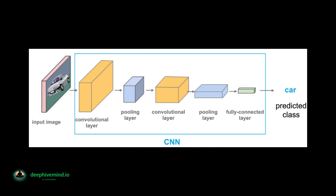After passing through multiple convolutional and pooling layers, the feature maps are then passed through fully connected layers, which analyze the high-level features of the data. The fully connected layers use the information from the previous layers to make predictions about the input data, such as classifying an image as a specific object. Finally, the output of the CNN is passed through a final layer, called the output layer, which produces the final predictions of the network. These predictions can be used for tasks such as image classification, object detection, and semantic segmentation.